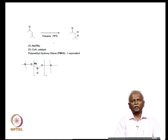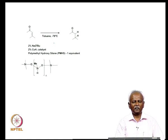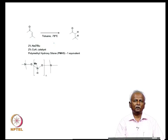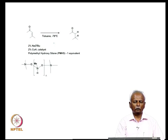The catalytic cycle is common for many systems. Two more examples illustrate how monohydrides might act as catalysts. Here is a copper hydride which specifically hydrogenates a conjugated enone, converting it into a simple ketone.